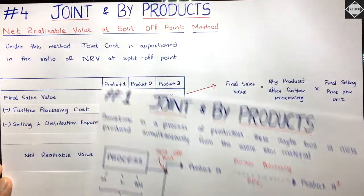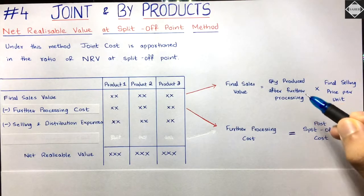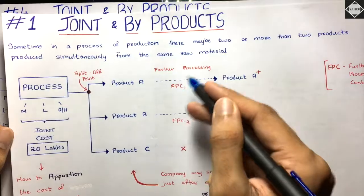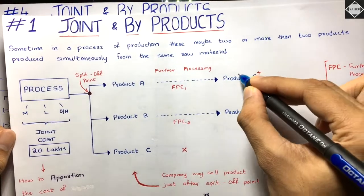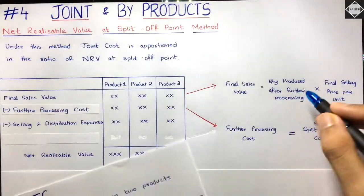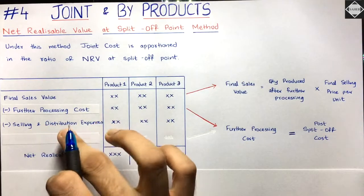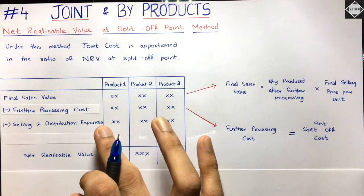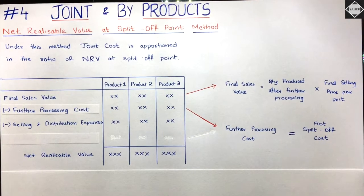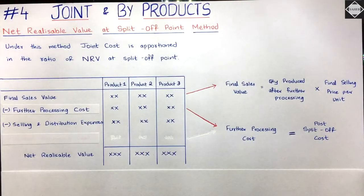How do you calculate the final sales value? You saw this in the previous sales value method. Take the quantity produced after further processing - note that during further processing there can be losses, so for example if 100 units came in and 10% were lost, only 90 units come out, so you take 90 units. Multiply that by the final selling price per unit to get the final sales value. Further processing cost is also called post split-off cost, because it is incurred after the split-off point.